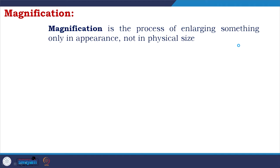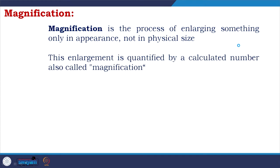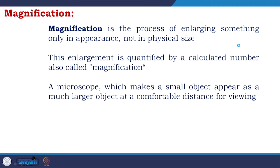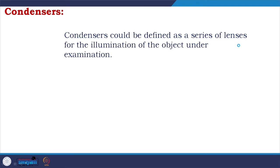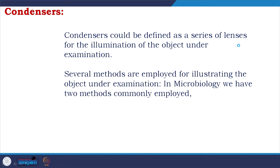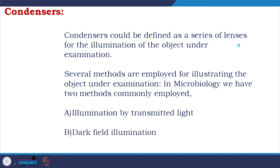Magnification is the process of enlarging something only in appearance, not in physical size. A microscope makes a small object appear much larger at a comfortable viewing distance. Resolution is determined by wavelength of light and the light-gathering power of the objective and condenser lenses. Higher numerical aperture gives better resolution; shorter wavelength gives better resolution. Two illumination methods are used: illumination by transmitted light and dark field illumination.